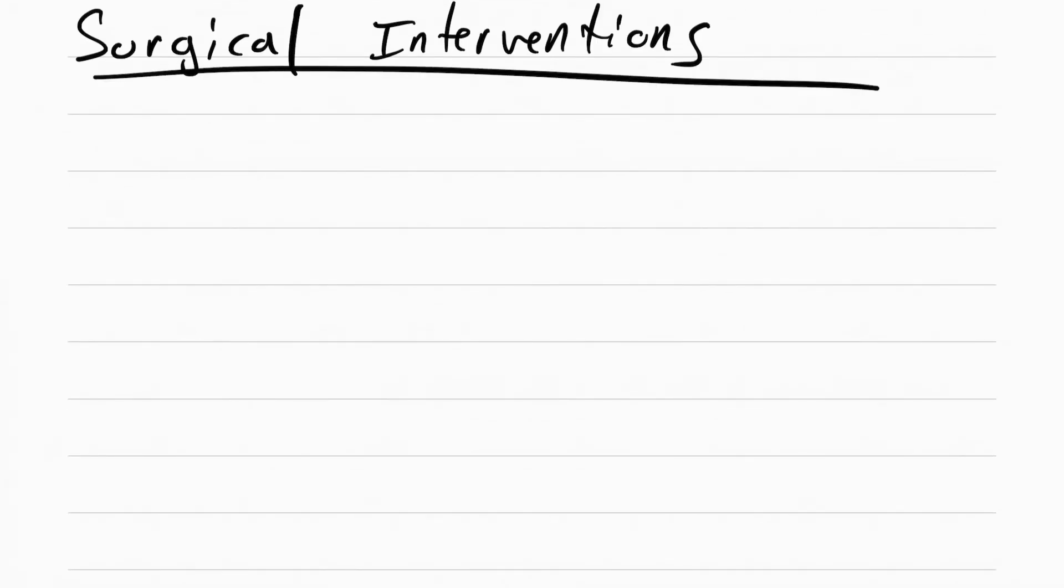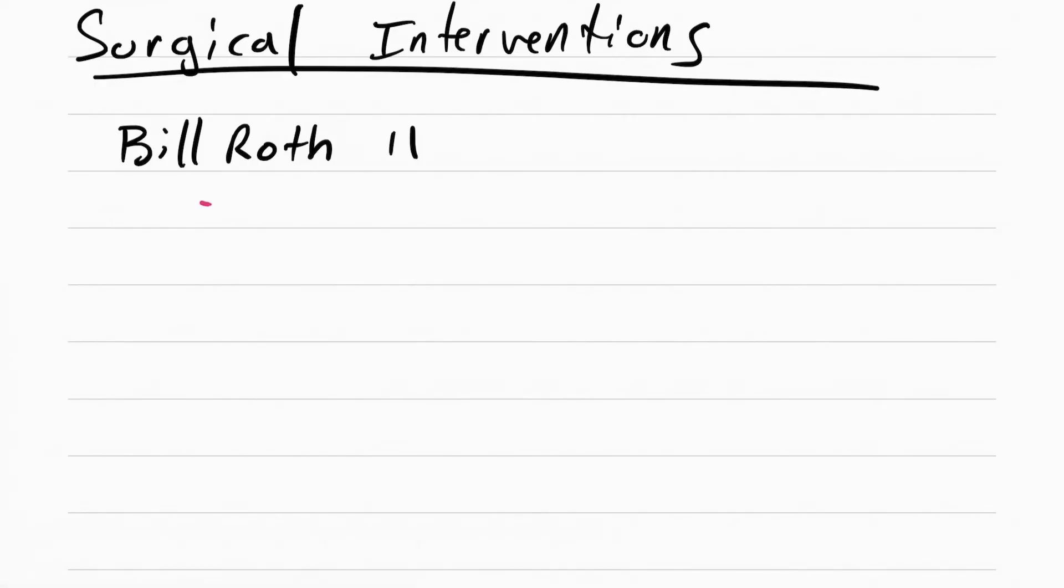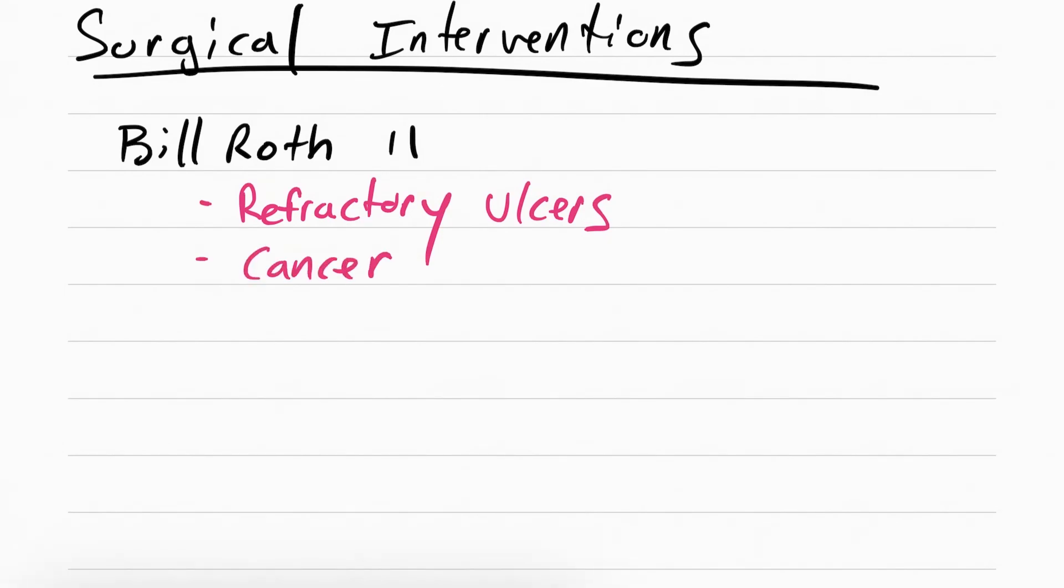Now we're moving on to surgical interventions. Sometimes patients can get this procedure called a Bilroth-2 procedure. Bilroth-2 involves cutting a portion of the stomach and reattaching it to a part of the small intestine. This can be done for something called a refractory ulcer, which just means an ulcer that doesn't heal. It can also be done if they find cancer.